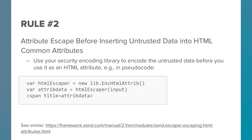Rule 2: attribute escape before inserting untrusted data into HTML common attributes. You would use your secure encoding library to encode the untrusted data before you use it as an HTML attribute. In this pseudocode, you initialize your encoder for your HTML attribute, take your untrusted input data and feed it into your encoder, and the output is what you put into your HTML attribute, like a span title. You can see a similar idea with the Zend escaper in the Zend framework as shown in the document link here.